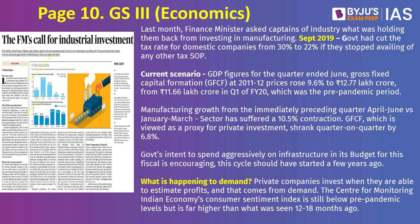The government has been trying to push manufacturing — for example, in September 2019 they cut the tax rate for domestic companies from 30% to 22%. The expectation was that companies would invest the saved money into building infrastructure and manufacturing plants, creating more jobs. But that has not always happened. The government reduced corporate tax rates, but this has not resulted in corporates investing that money back into the manufacturing sector.